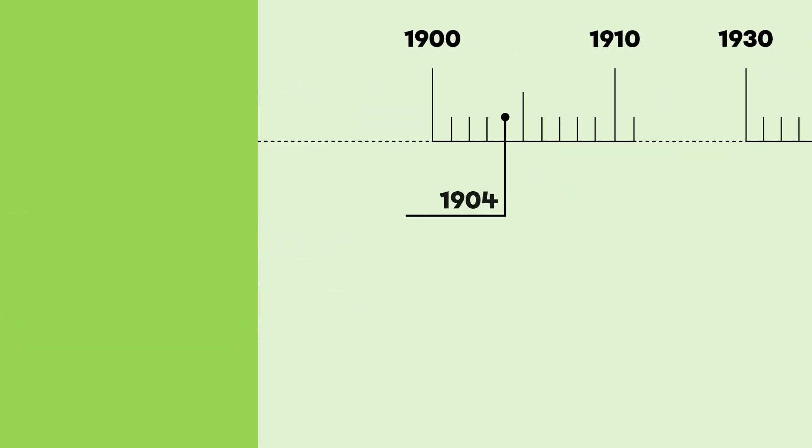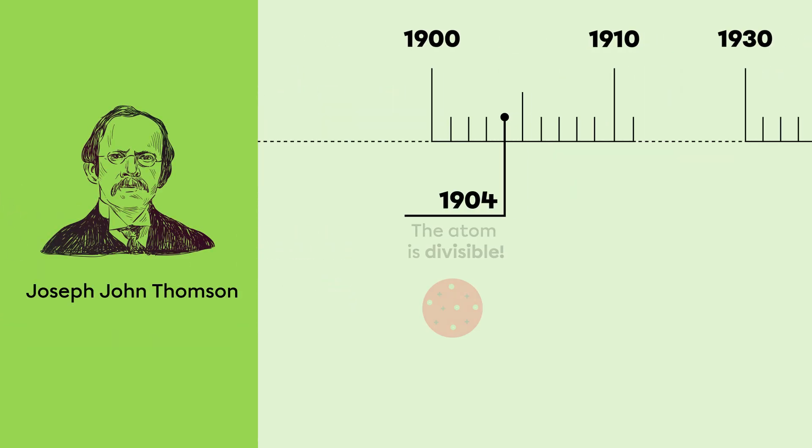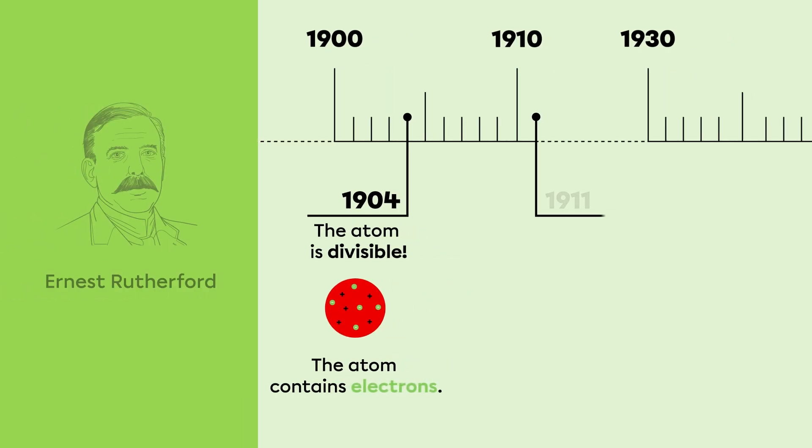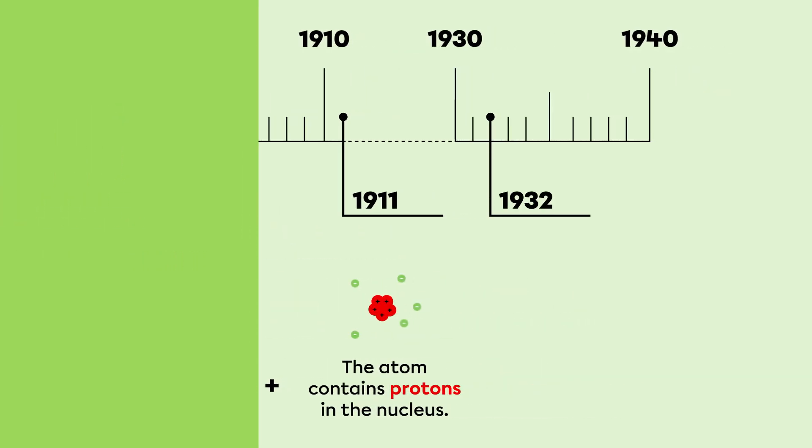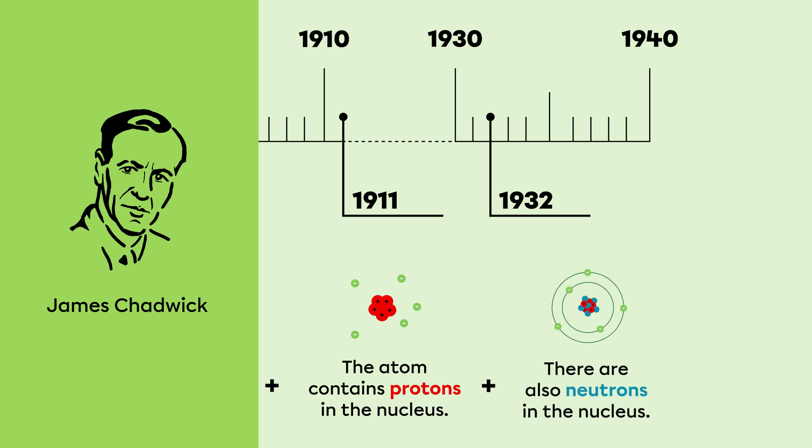In 1904, Thomson discovered that an atom could be divided because it contained small particles called electrons. In 1911, Rutherford's experiment showed that an atom has protons grouped within a nucleus. In 1932, Chadwick discovered that there are also particles called neutrons in the nucleus.